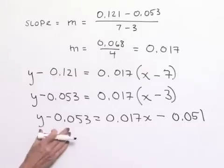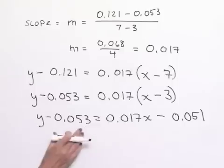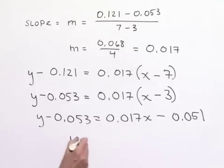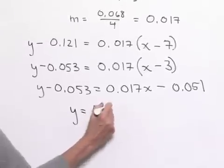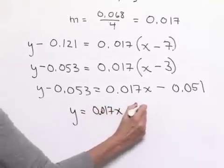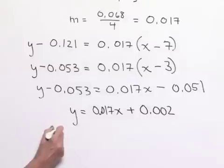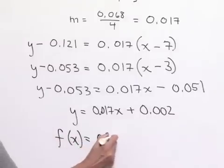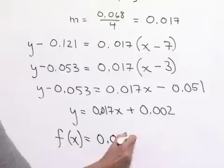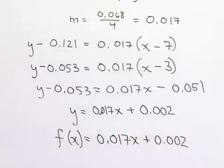Now, to solve for y, we're going to add this 53 thousandths to both sides of the equation. That gives us y equals 0.017 times x, and when we add, we end up with plus 0.002. Now we're going to write this in function notation. f(x), then, equals our slope times x plus the constant 2 thousandths.